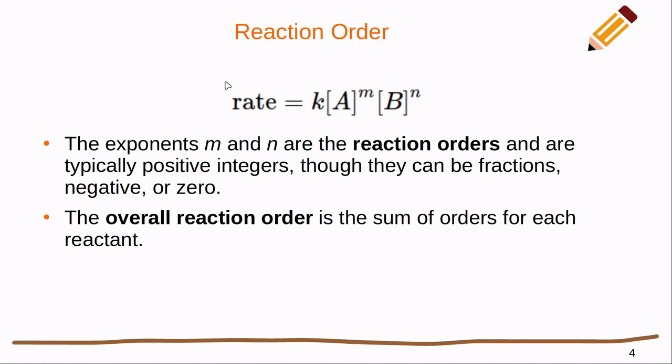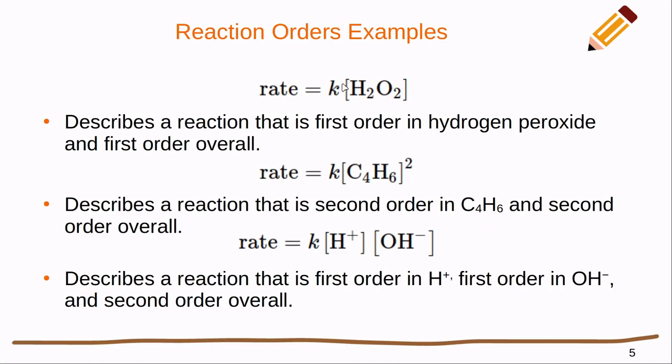The overall reaction order is the sum of orders for each reactant. So in this example, the overall reaction order for this reaction would be m plus n. So let's go over some examples of reaction orders. If I had a rate law that looked like this, there's an implied one right here.